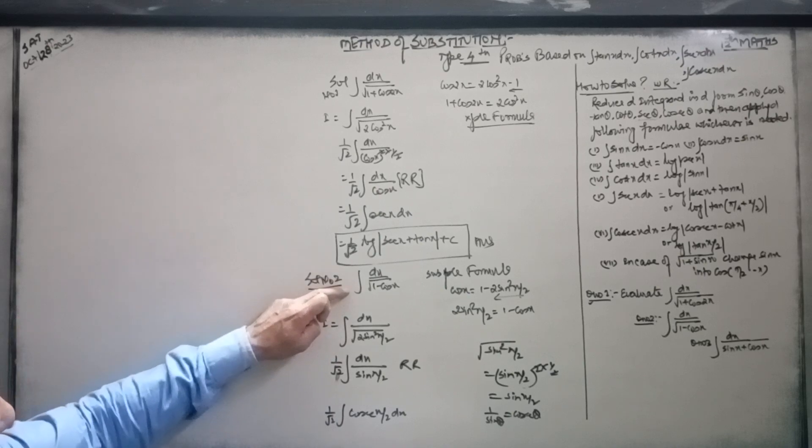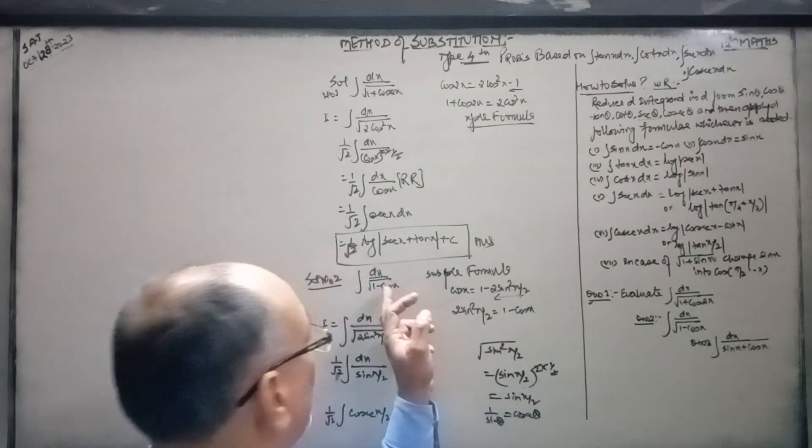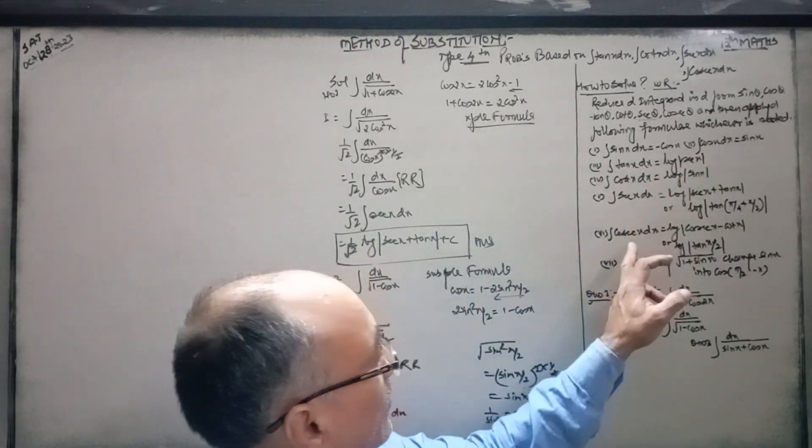Now you can reduce the integration of cosec x by 2.